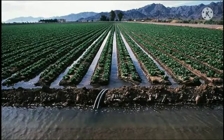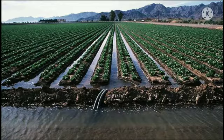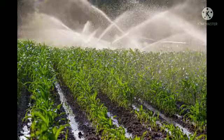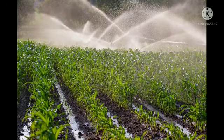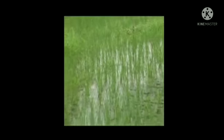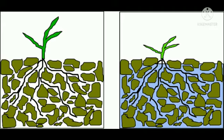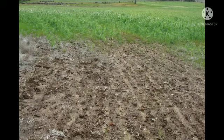Besides providing the right amount of water, it is necessary to have adequate drainage in irrigated fields. Excessive watering on the field may cause a condition called water logging, which may harm the crops by reducing the supply of air to the roots of plants and increasing the salt content of the soil, which is harmful for the crop.